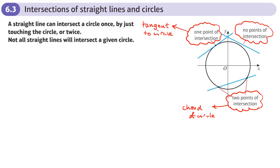A chord is a line that intersects the circle at two points, and it actually extends beyond the circle. The portion inside the circle is really the chord — the definition may include the part that goes beyond, but essentially it's called a chord.